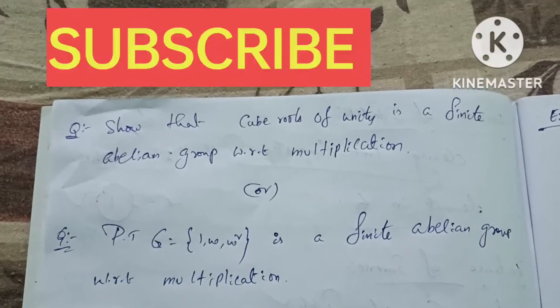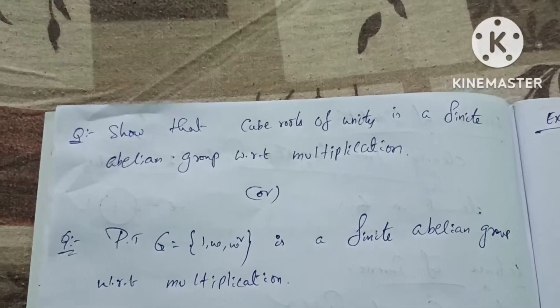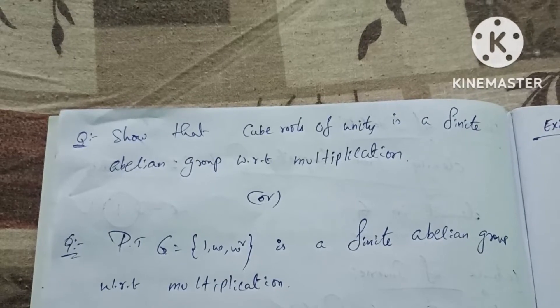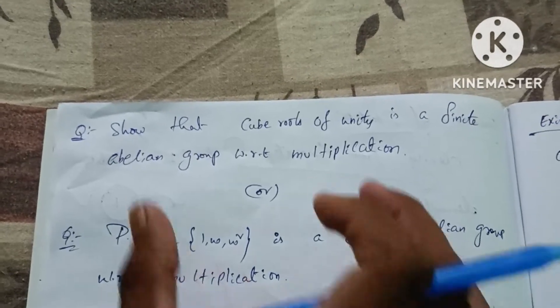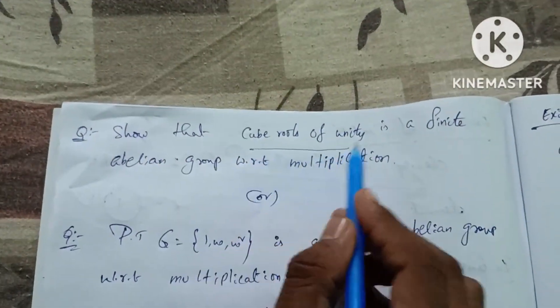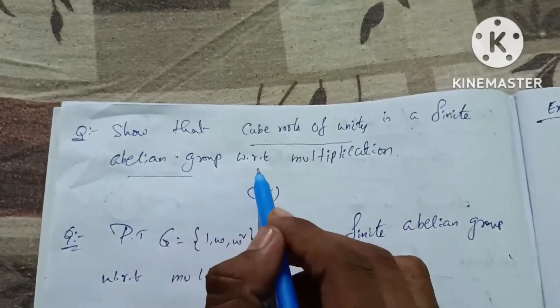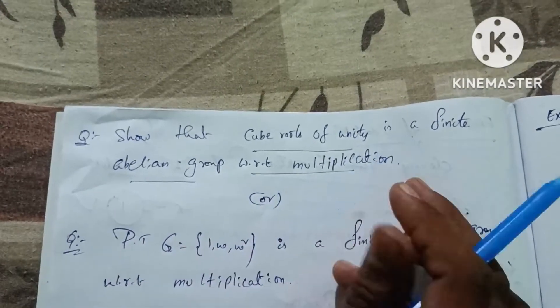Please like the video and support the channel. Let's show that cube roots of unity is a finite abelian group with respect to multiplication.